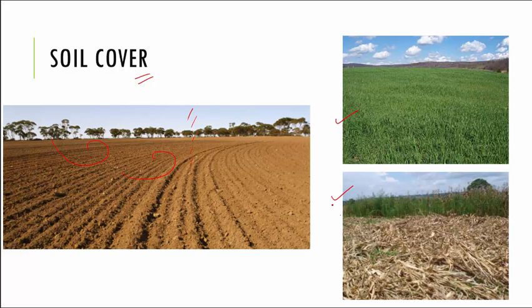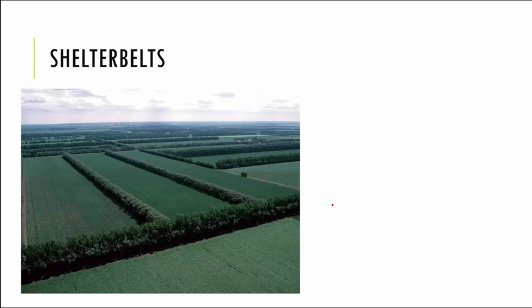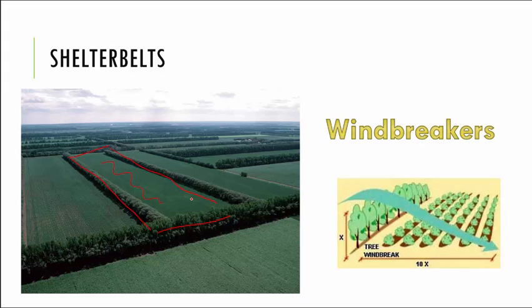The next method is called shelter belts. Generally growing hedges or trees along the edges of farmlands will act as wind breakers. You can see several hedges here — a farmland protected on all four sides by hedges. Hedges act as wind breakers and help in reducing soil erosion that is caused because of wind.